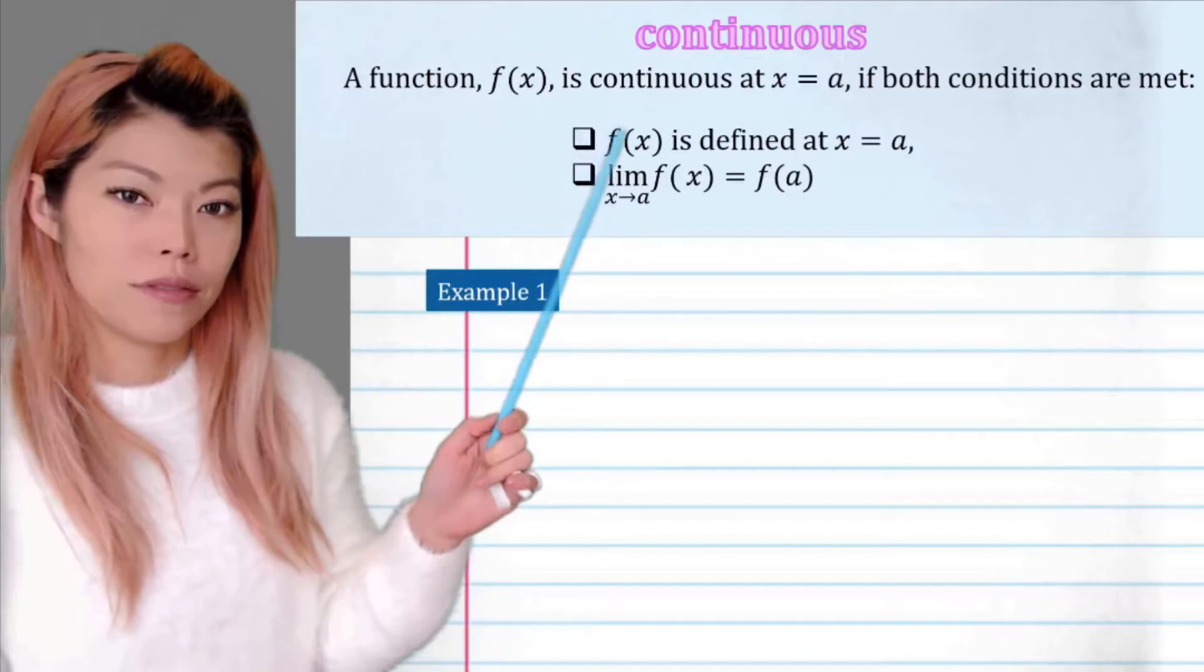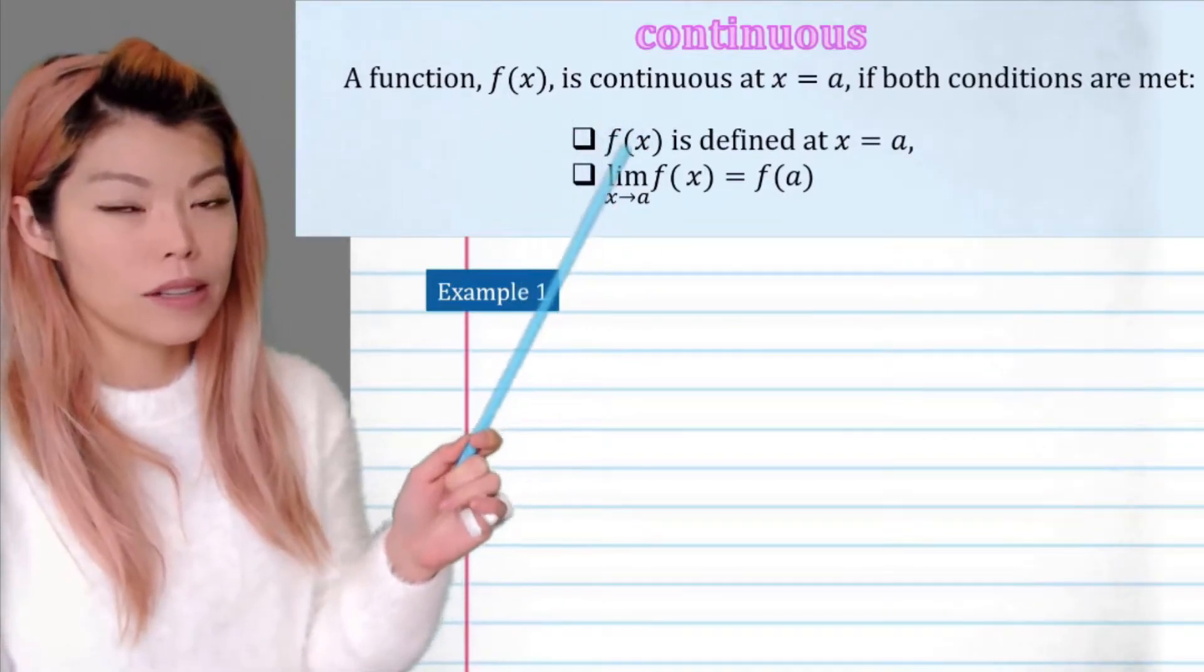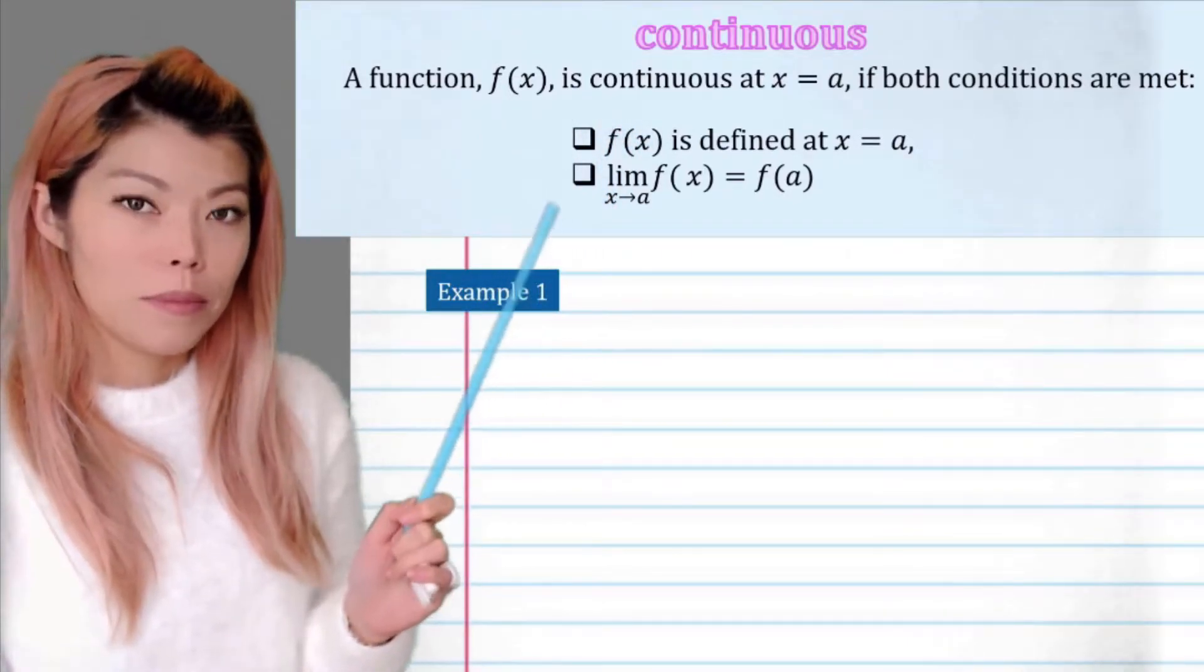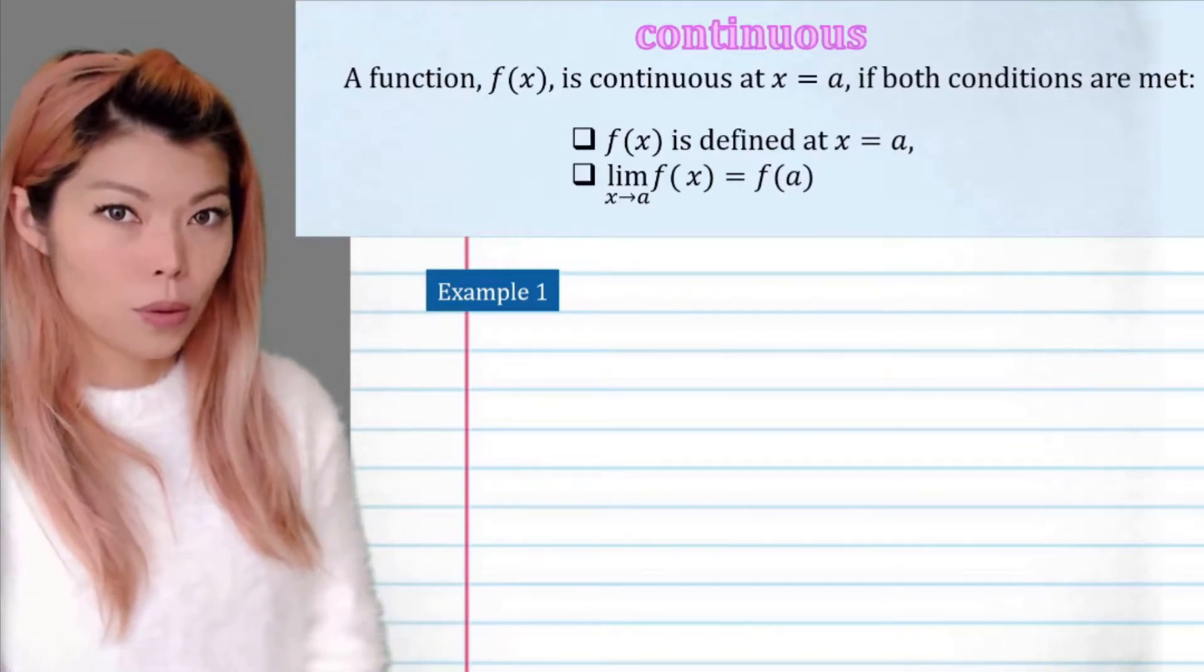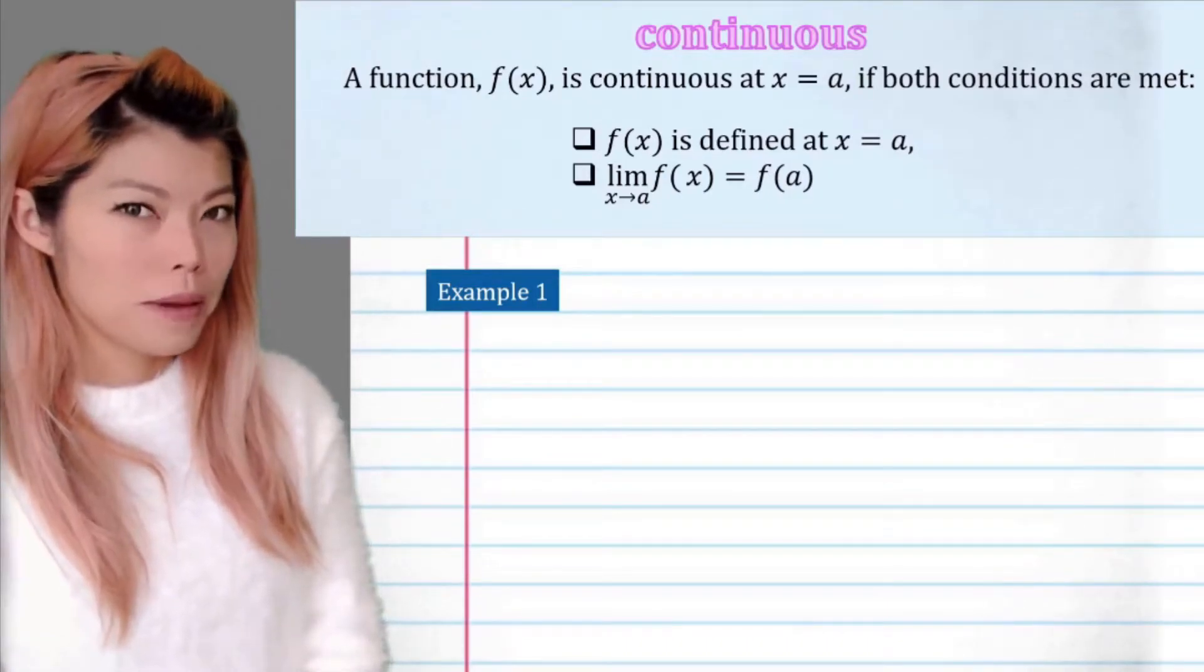Firstly, we have to have the function defined at that point, and secondly, the limit must exist at that point. What does that mean?